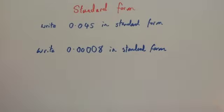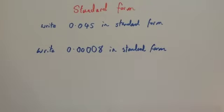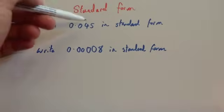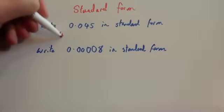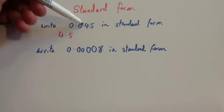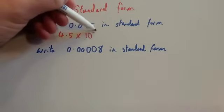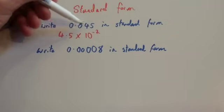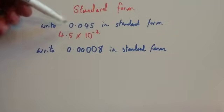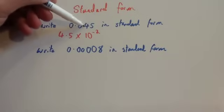So let's write some decimal numbers in standard form. We've got 0.045 and we've been asked to write it in standard form. You always need to start off with a number between 1 and 10, so we're going to be using 4.5. Now, if the decimal point was in between the 4 and the 5, we would need to move it once, twice to the left to get the number we're going to start with. So we're going to times it by 10 to the power of minus 2, because we want to divide 4.5 by 100 to get 0.045 — move the decimal place twice to the left.